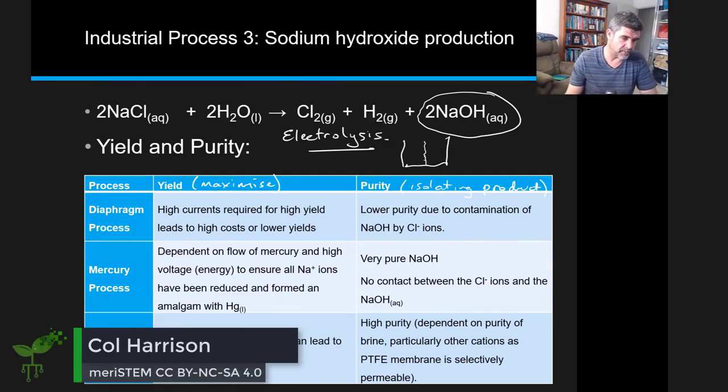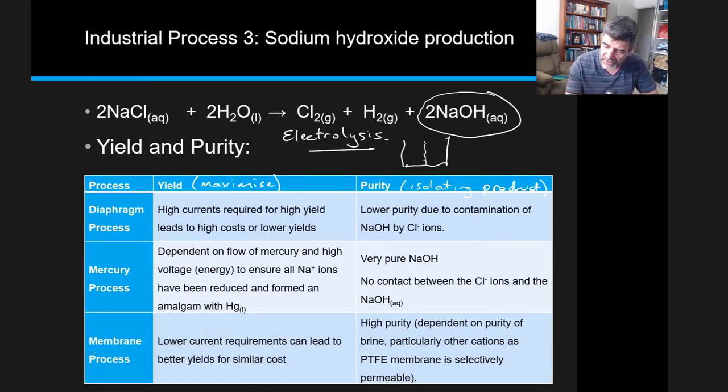The first of these processes is the diaphragm process. This is a diaphragm that sat in between the two cells. This was a problem because for high yields, we had to increase the size of the current.